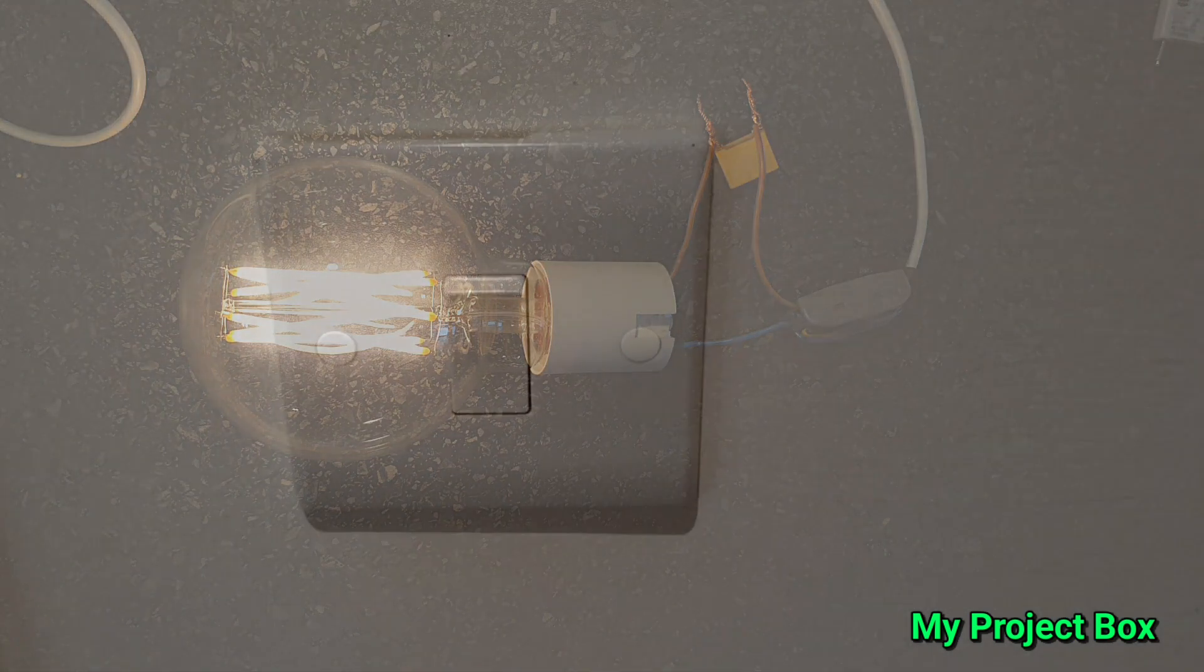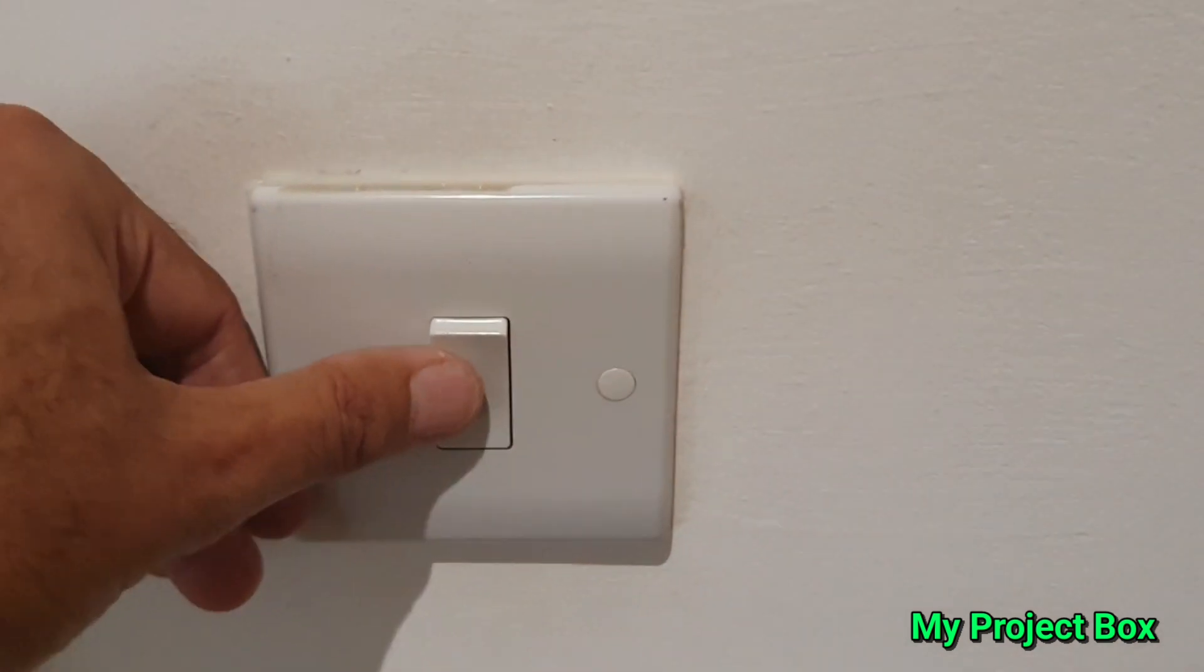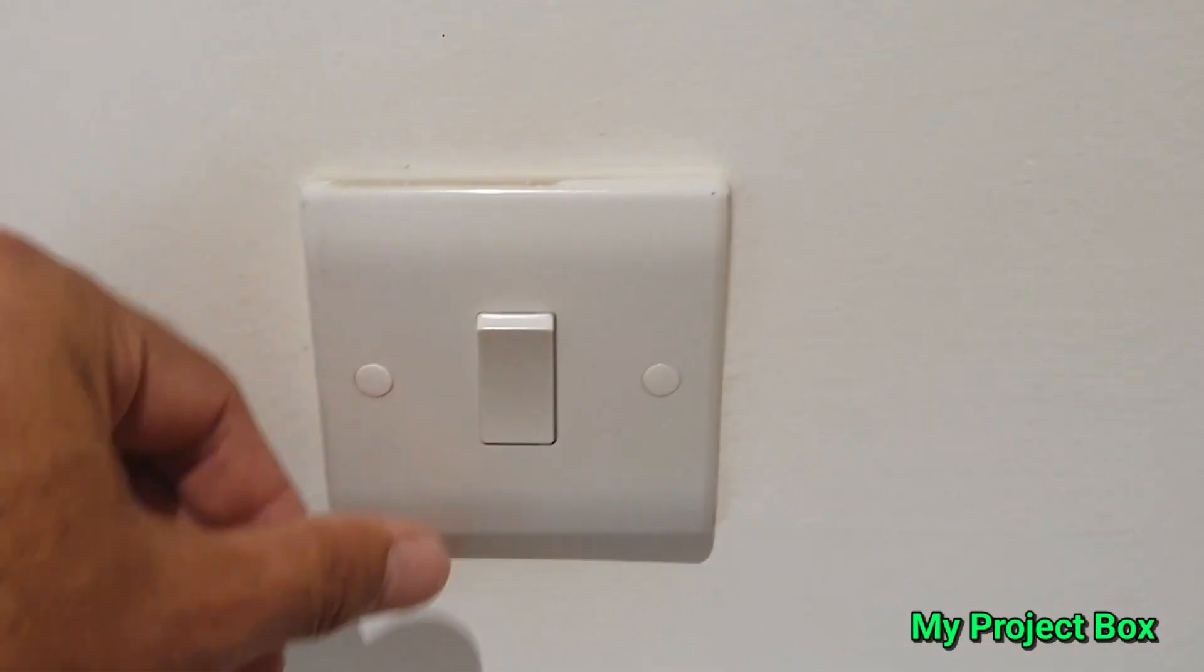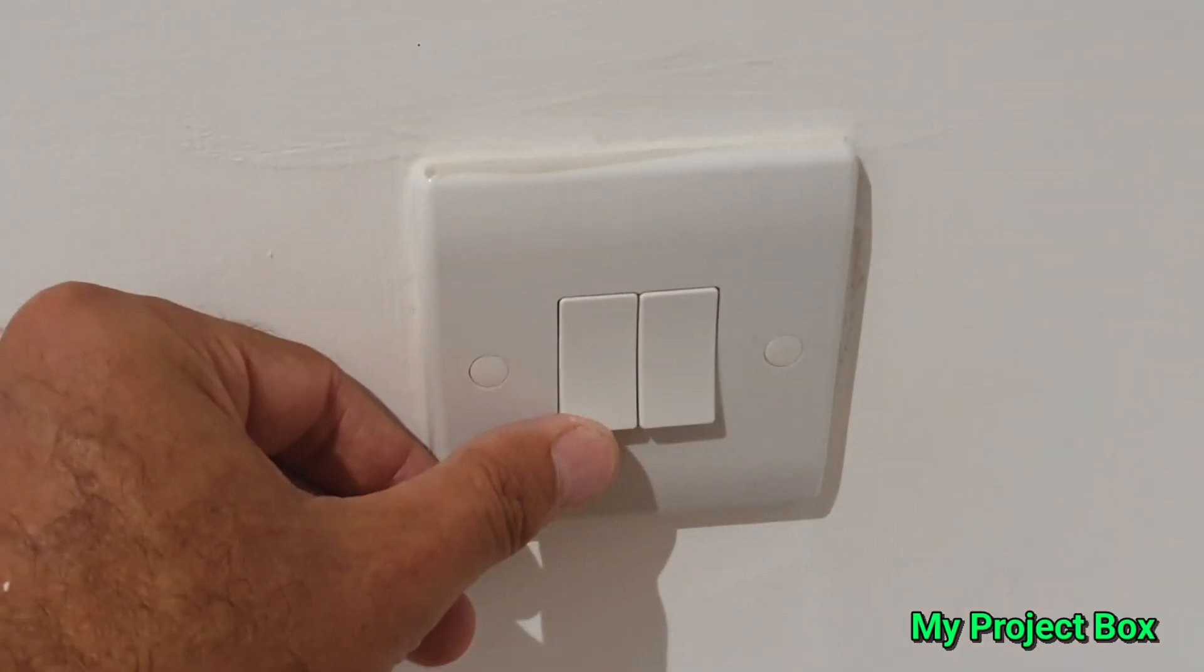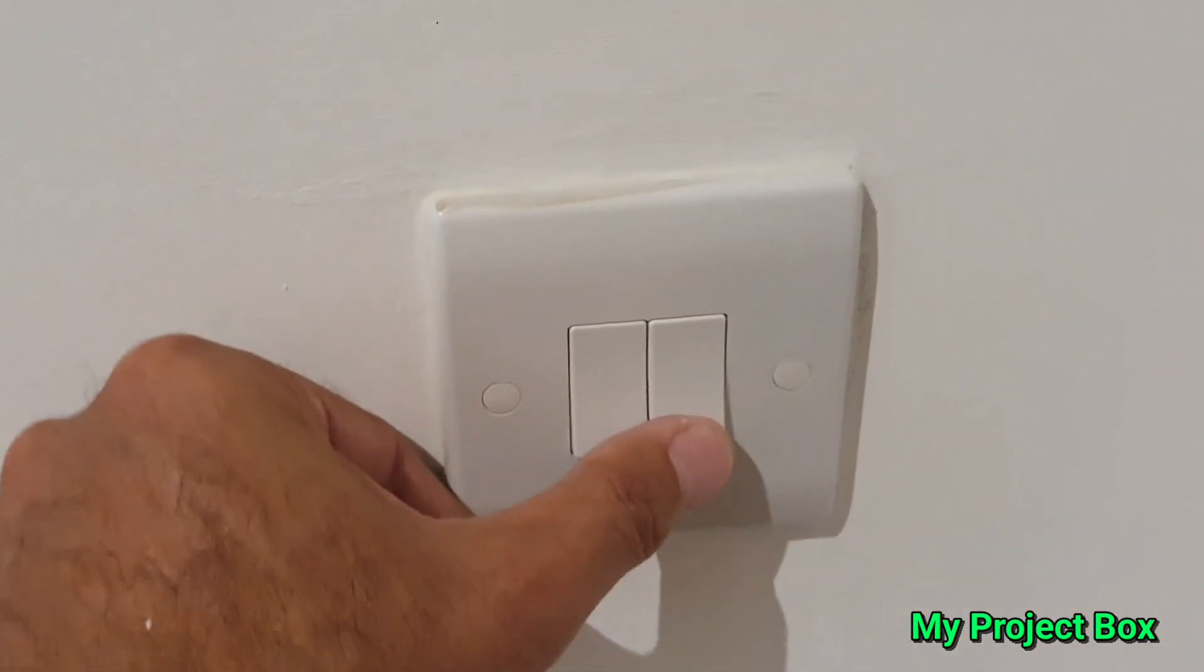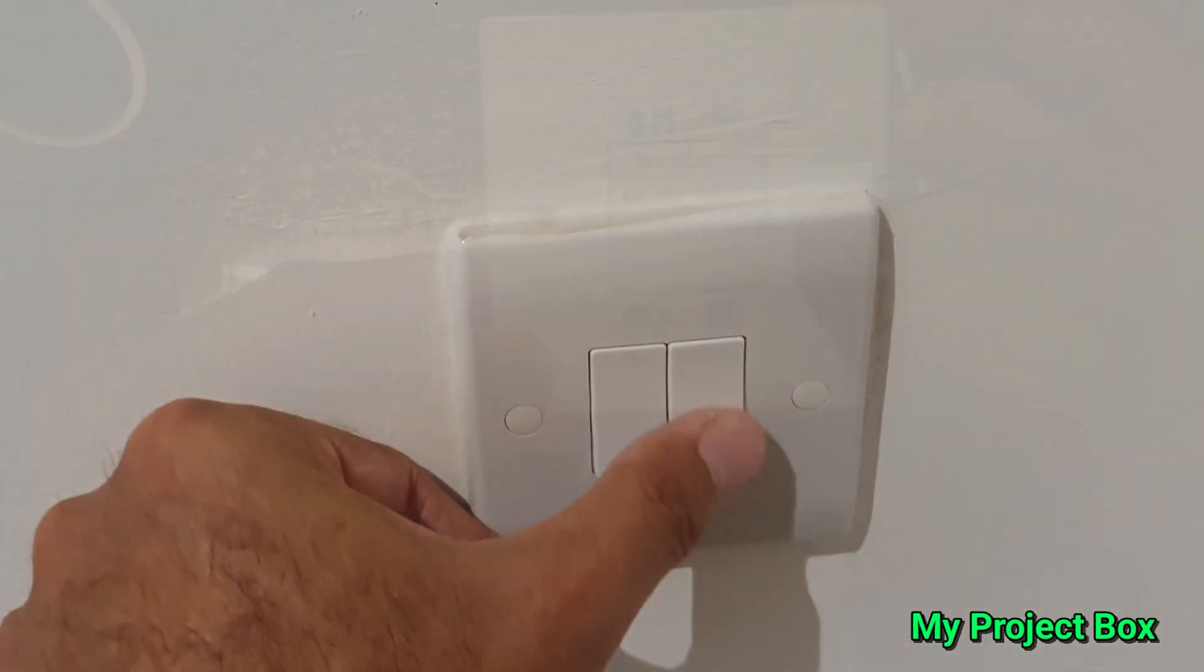So now we can go one step further and change our original light switch, single light switch, to a double one. And we can have, instead of just an on-off, we can use the other switch as a high-low setting.